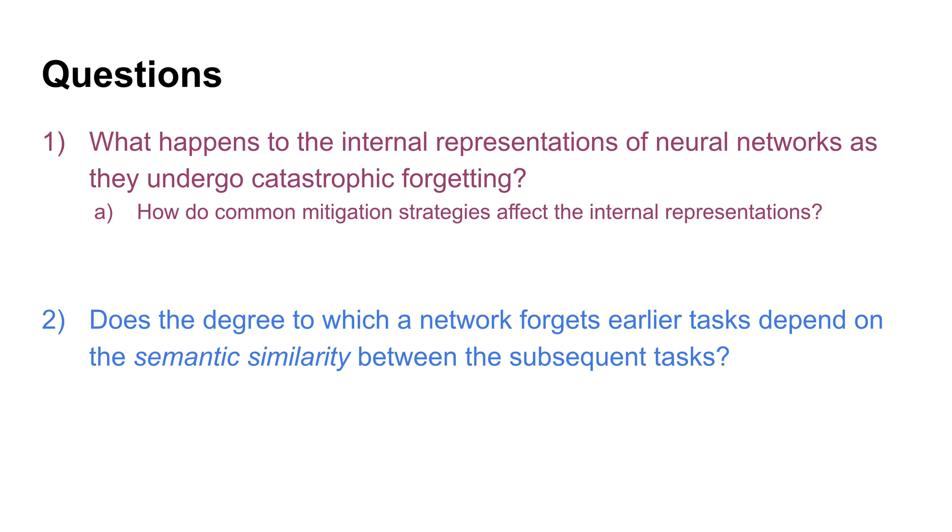In particular, we want to study two specific questions. One, what happens within a neural network when it undergoes catastrophic forgetting? For example, are the internal representations of each layer corrupted roughly equally or are there some layers which are affected more than others?